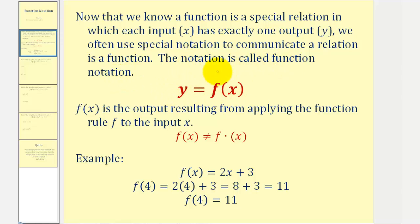For example, here we see y equals f of x. So f of x is function notation, where f of x is the output resulting from applying the function rule f to the input x. When using function notation, we need to remember that x is the input and f of x is the output, and therefore f of x is equal to y.